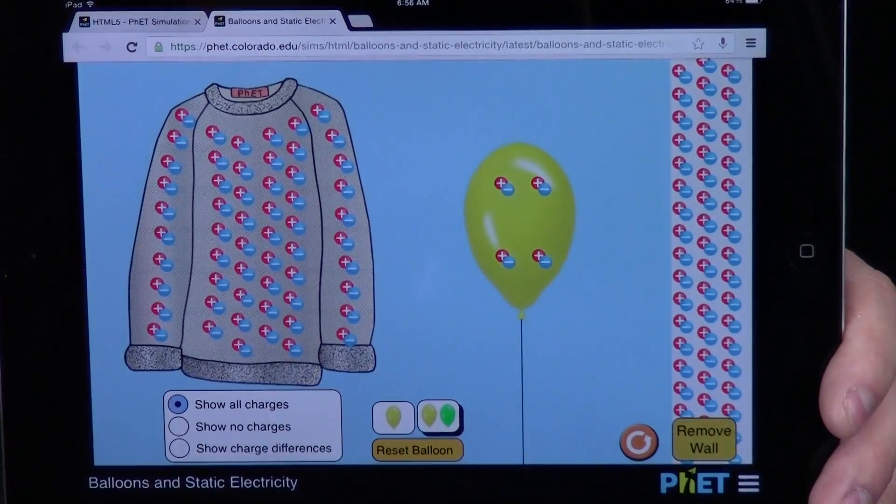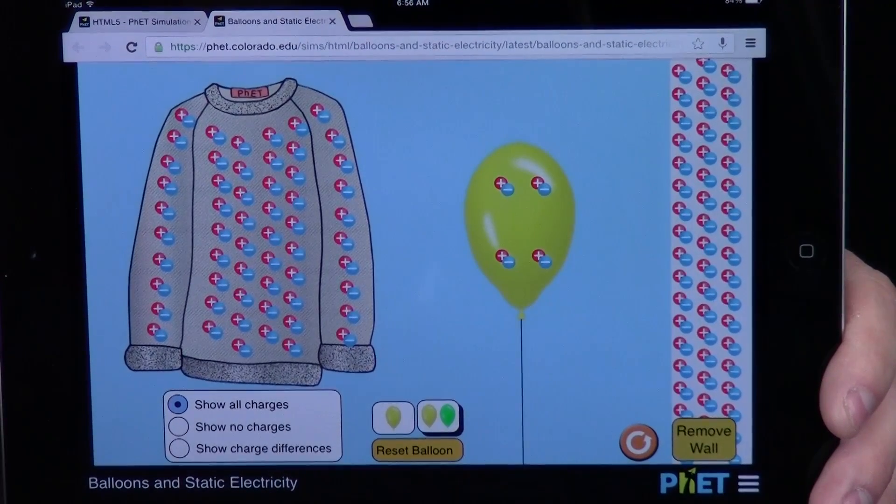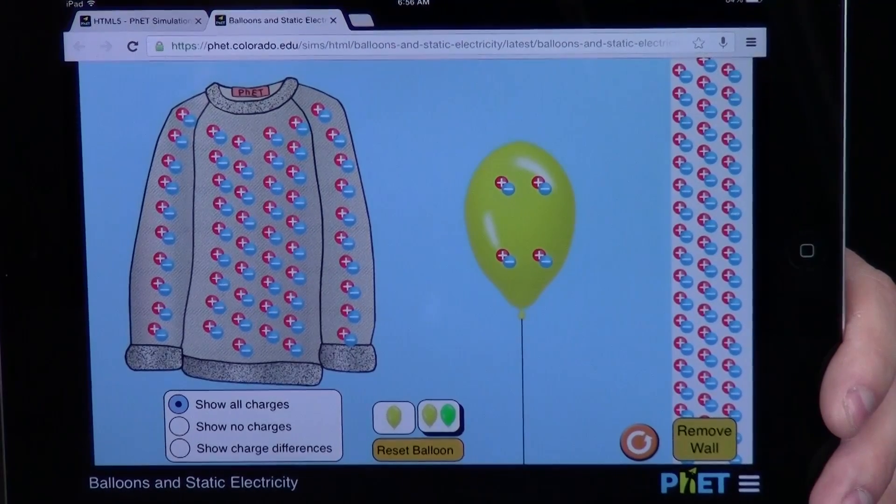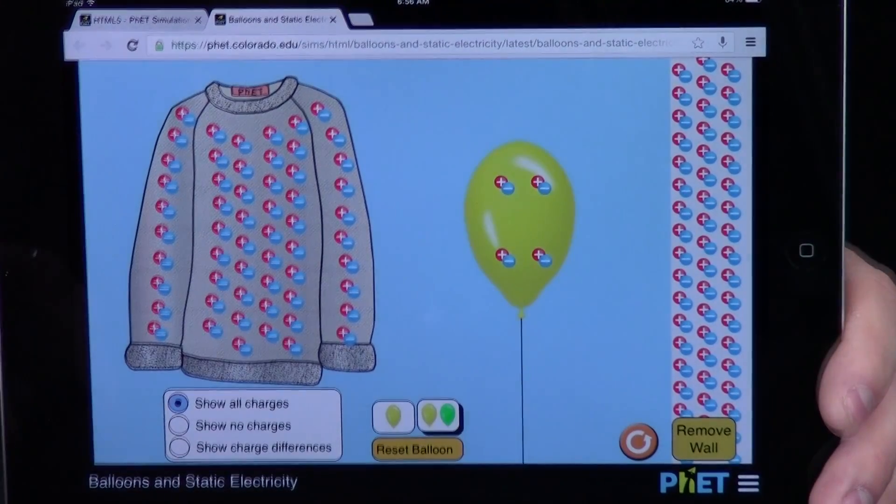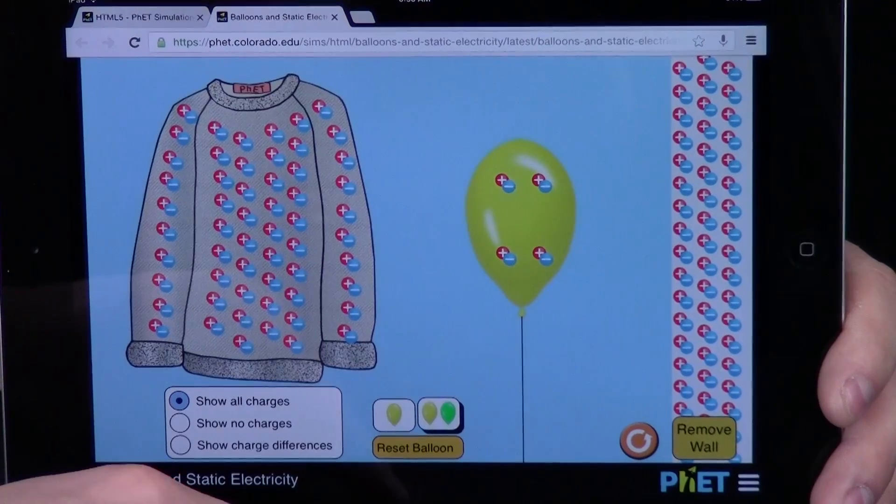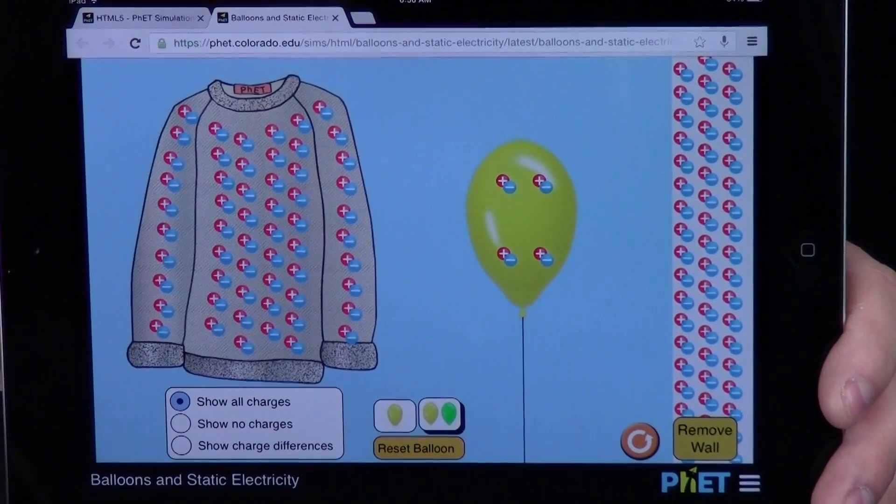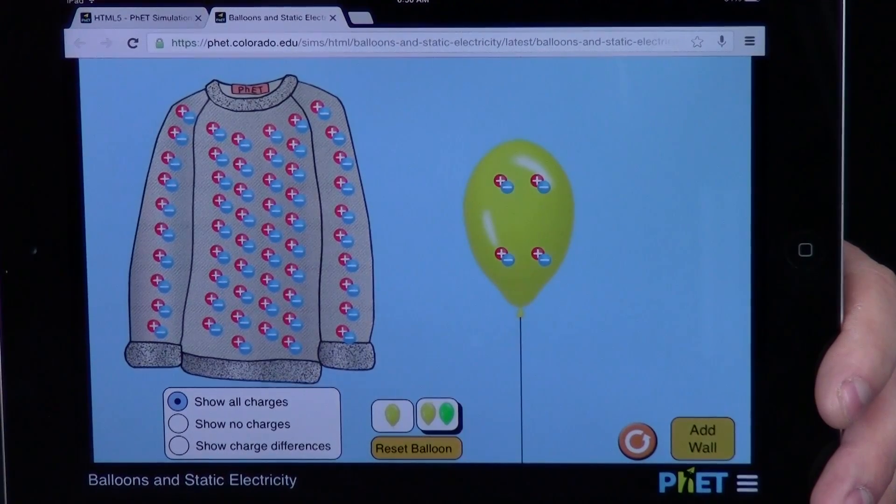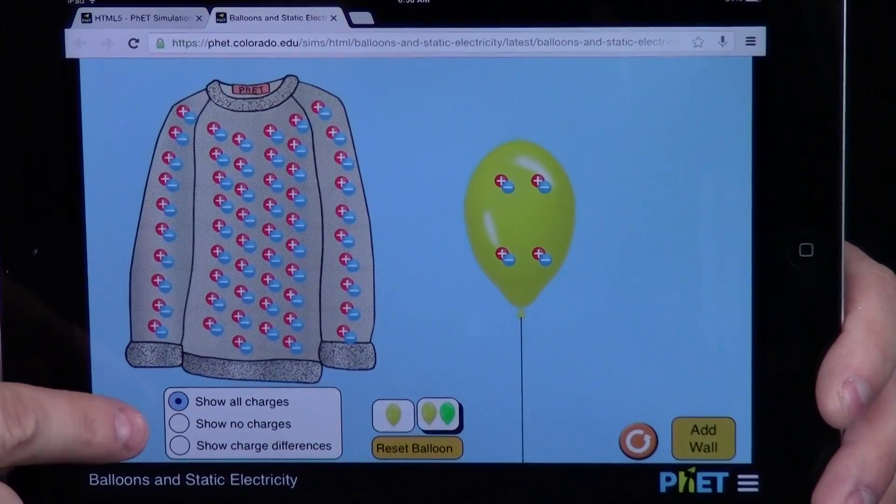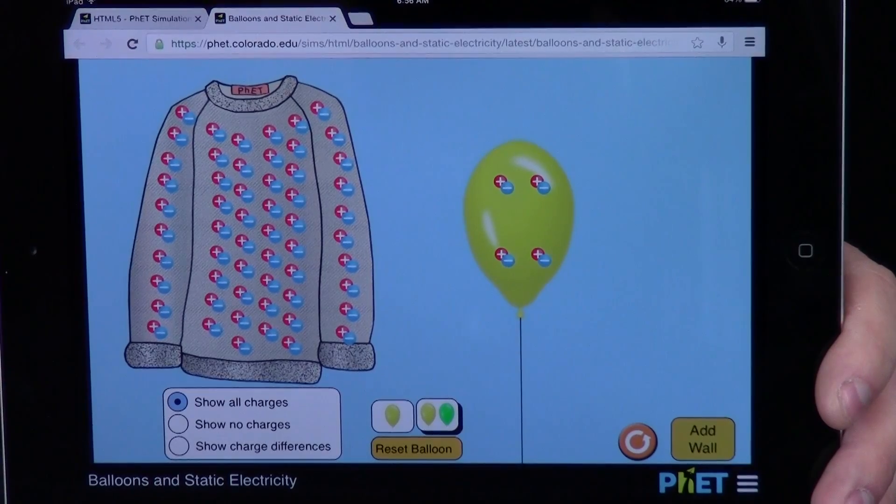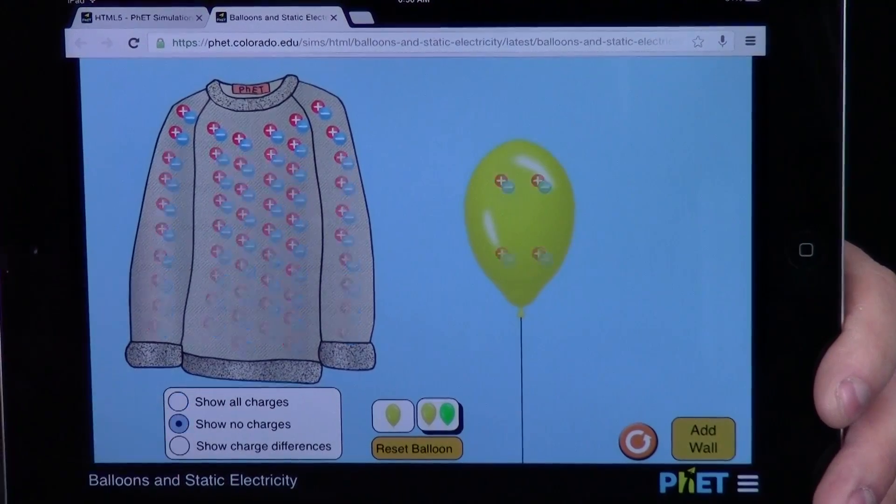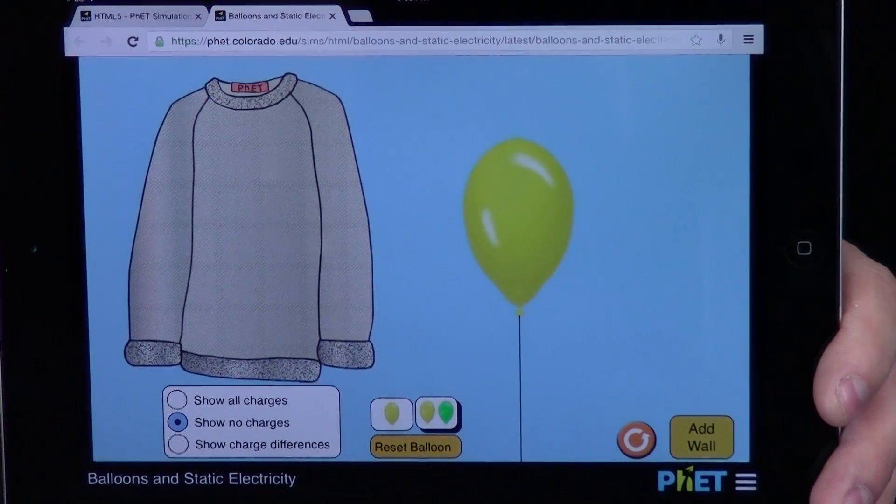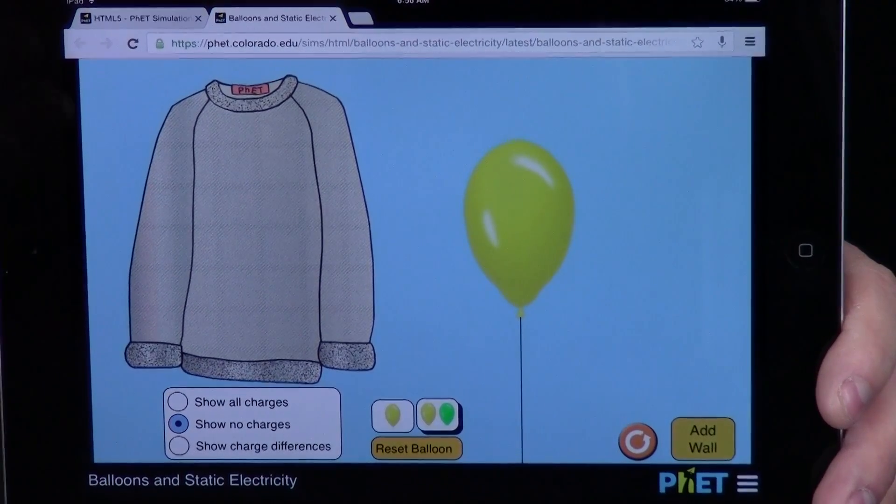I find that it overwhelms students to see all the pluses and minuses right at the beginning, so we want to put it into a scene that they can really relate to and see. I'm going to click the button that says remove wall, and it goes away. I also want to remove the charges to begin with so students aren't overwhelmed. There's a button down here that says show no charges. I click that, and boom—now I have something a lot of students have seen before: a balloon and a sweater.